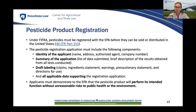Once pesticide data is submitted to the EPA, it is used to complete risk assessments and write instructions for how to use it safely. The data must answer questions about the pesticide's chemistry, how well it works, and how it might affect people, animals, plants, and the environment. Applicants must demonstrate to the EPA that the pesticide will perform its intended function without unreasonable risk to people or the environment. This evaluation considers the economic, social, and environmental costs and benefits associated with the use of the pesticide.